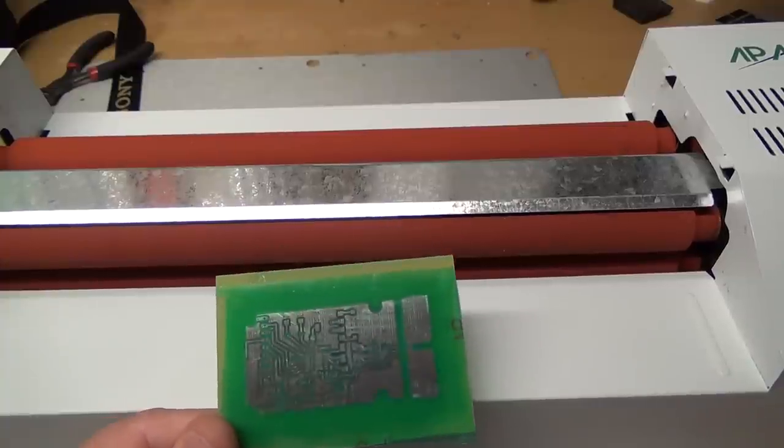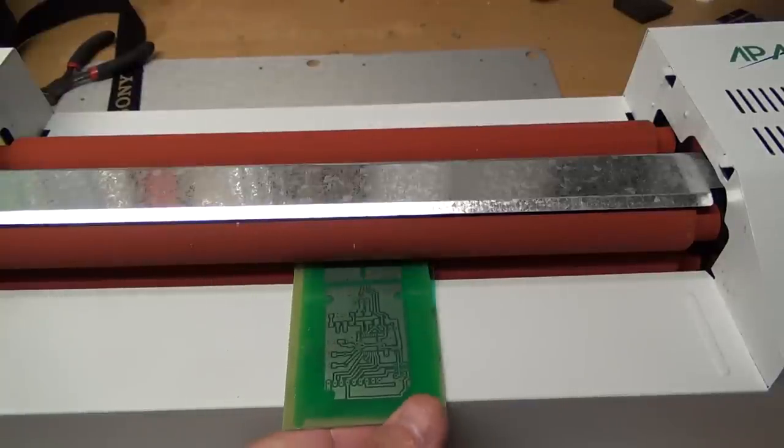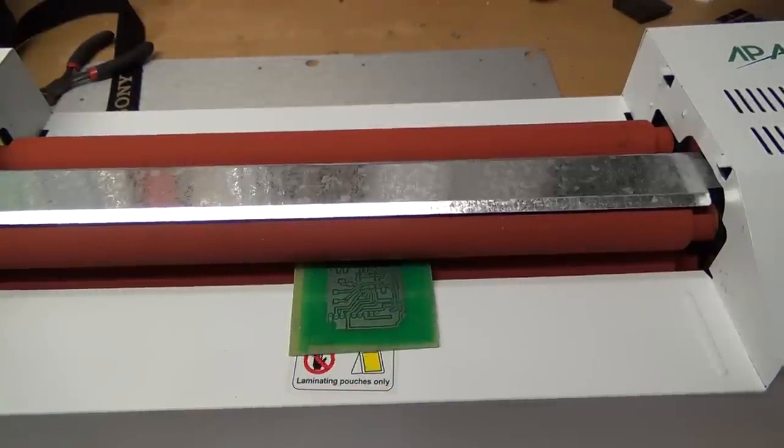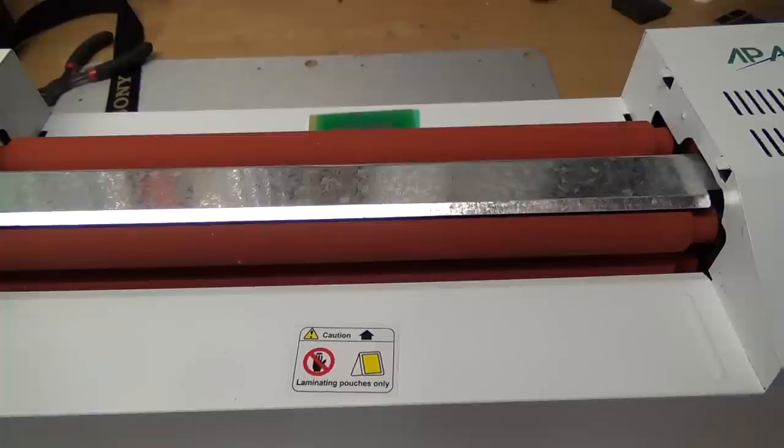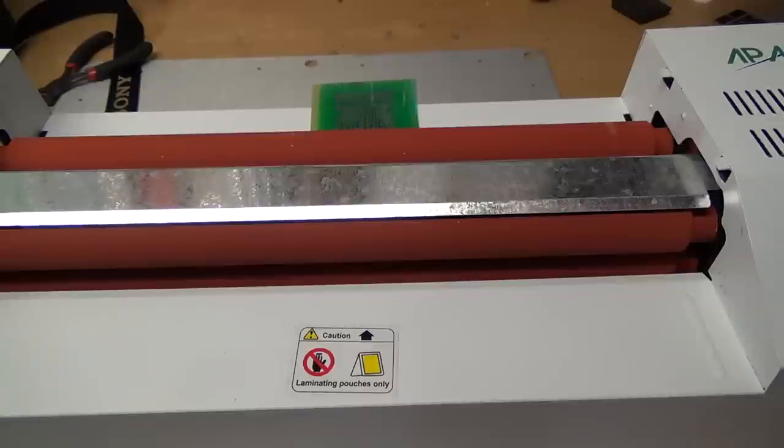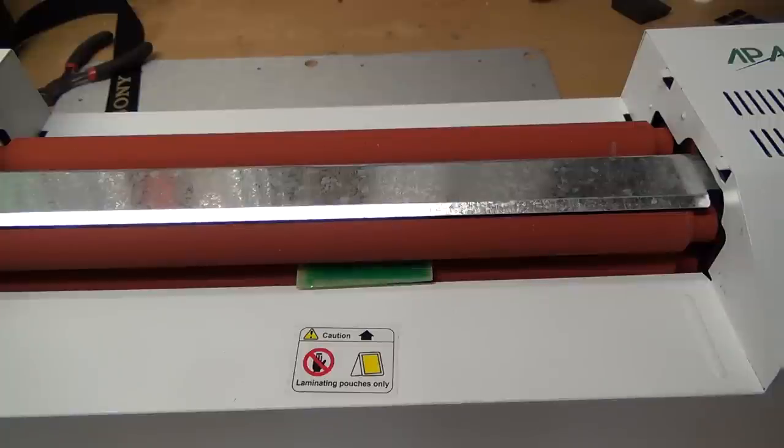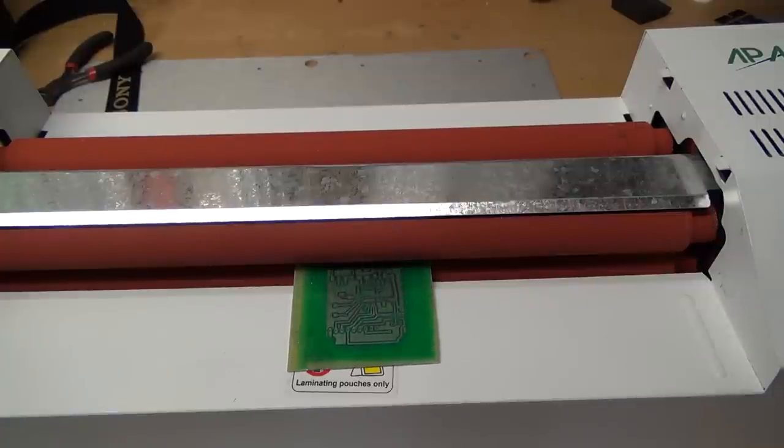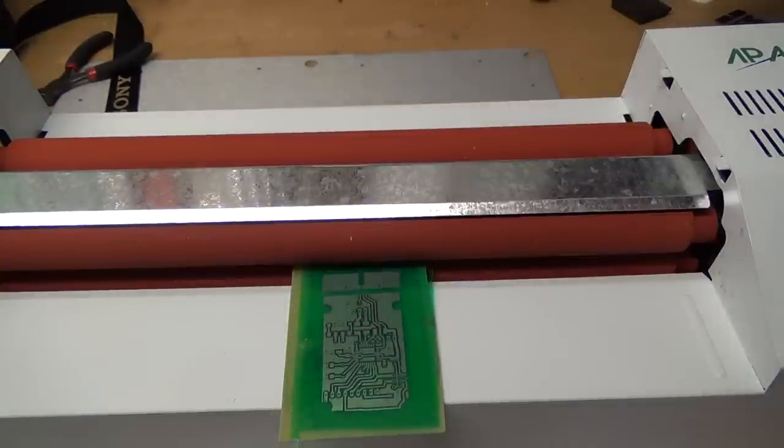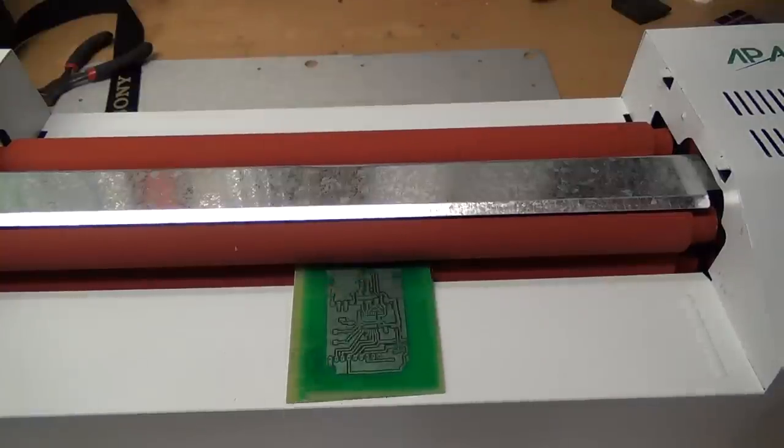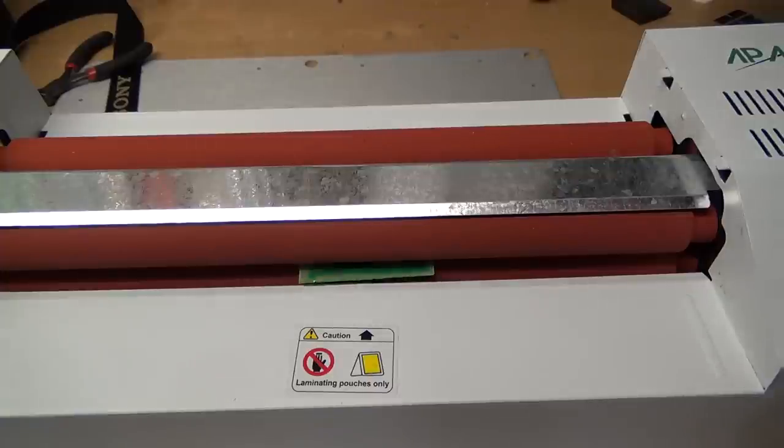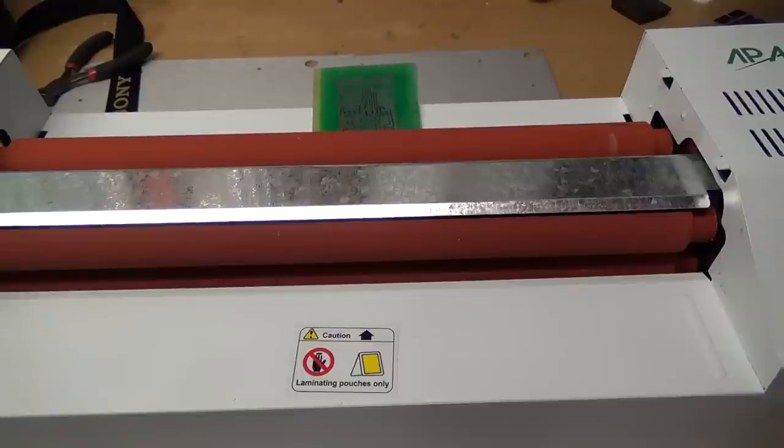I've got the solder mask material on the board and the laminator's heated up. I'm going to run this through a few times to adhere it to the board better. This laminator has a reverse switch so I can roll it back and forth. This material has two protective layers—one we took off to expose the adhesive, and once we expose it we'll take the top layer off to develop it. I don't have the temperature set too high—it's on 150. I'm just trying to get the adhesive to soften and stick better.